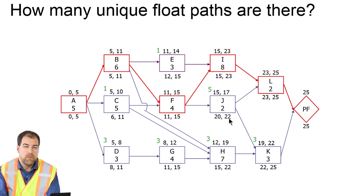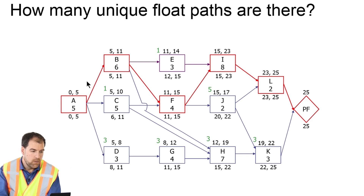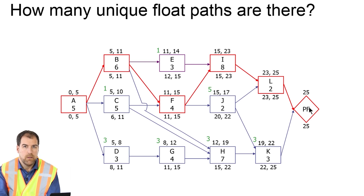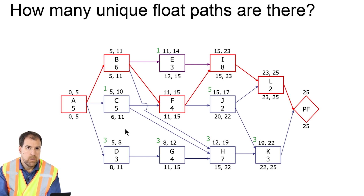So how many float paths do we have in this project? If you count the critical path as one, E as another, C and J as two more, and then the path along the bottom, that's five float paths. So we have five different float paths on this project. Did you know that P6 can also calculate these float paths? Let's dive in and I'll show you how it works.